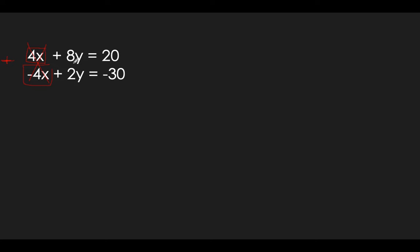So you've got 8y plus 2y — we're still adding — so 8y plus 2y gets you 10y. And 20 plus negative 30, so it's like 20 minus 30, would be negative 10. Now you've got to solve for y, so divide by 10. Y equals negative 1.